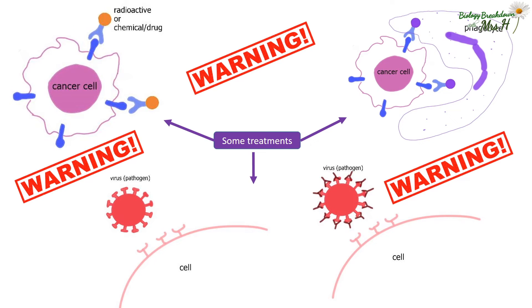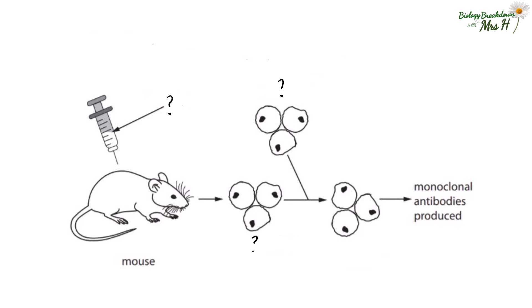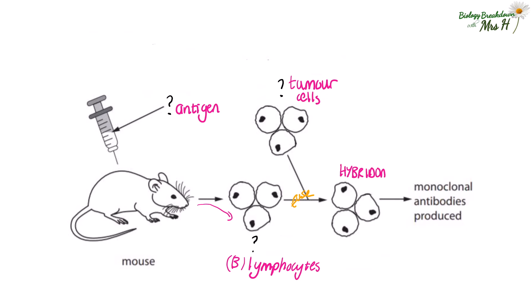Let's have a look at some exam questions, starting with some fact recall. What is being injected into the mouse? That is going to be the antigen. Which cells are going to be extracted from the mouse? Those are going to be lymphocytes. Which cells are those lymphocytes going to be fused with? Tumour cells. And what cells do they make? Hybridomas.